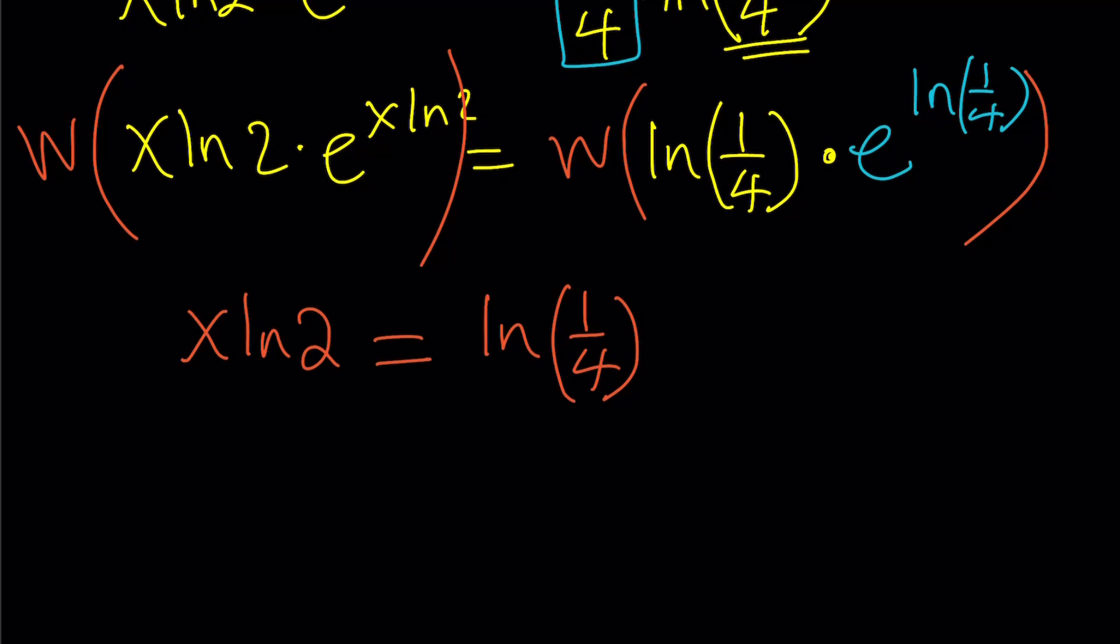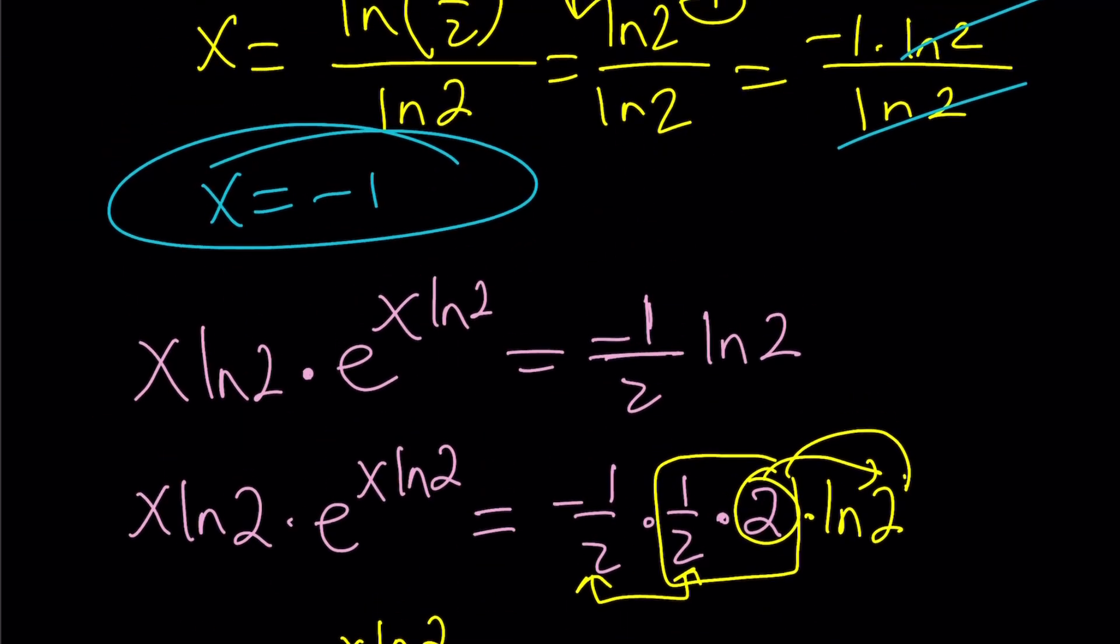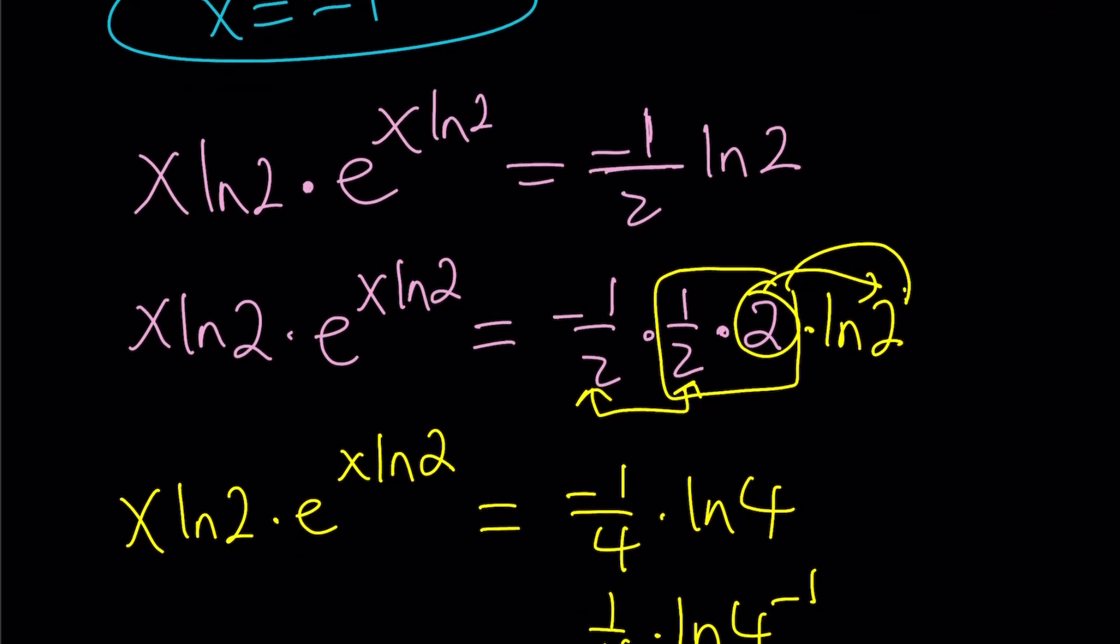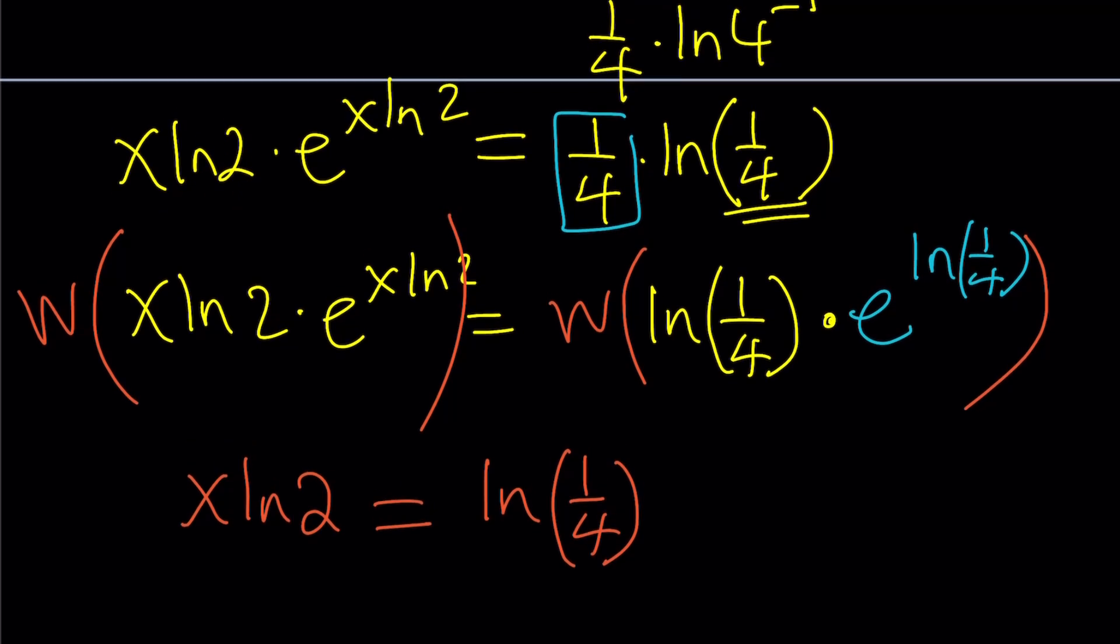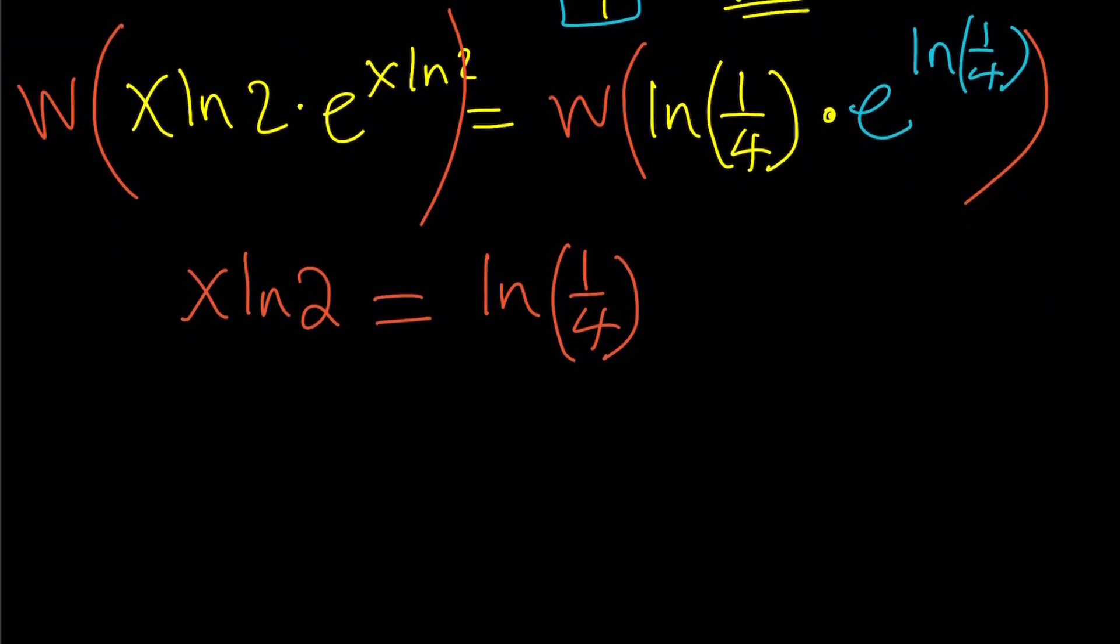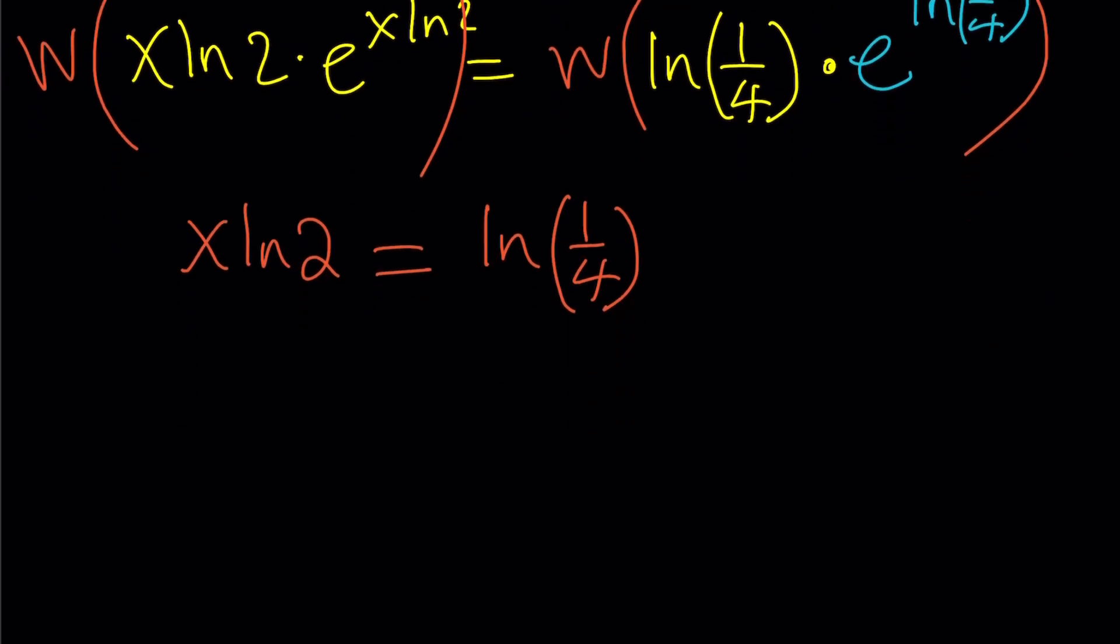I guess we could directly go there. Here what I could have done, I could just move this to here, and that would be just ln 1 fourth. But where is the other 1 fourth? That's what I needed. Anyways, I did something and it worked.